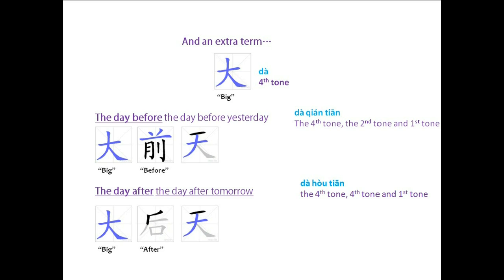The day before the day before yesterday: 大前天 (dà qián tiān). So if today was Friday, then 昨天 (yesterday) would be Thursday, and 前天 would be Wednesday. Then 大前天 would be Tuesday.